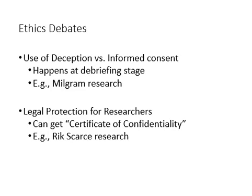The application of ethical principles is complicated by a few gray areas. One of those is the use of deception in particularly experimental research, when researchers have a need to conceal some aspects of the research design. That may infringe upon the ability to obtain informed consent — people don't really know exactly what they're signing up for. These questions need to be sorted out by the institutional review board, who will make a decision about the ethical nature of the research.